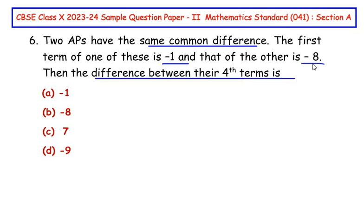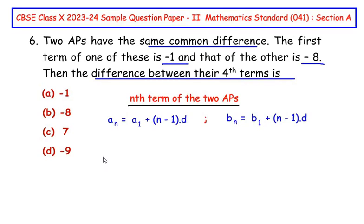First let me write the nth term of the two APs. The nth term of the two APs: I have taken the formula as a_n equal to a_1 plus (n minus 1) times d, and for the second AP I have taken the nth term as b_n equal to b_1 plus (n minus 1) times d. Here a_1 and b_1 are the first terms of the given APs and the common difference is same.